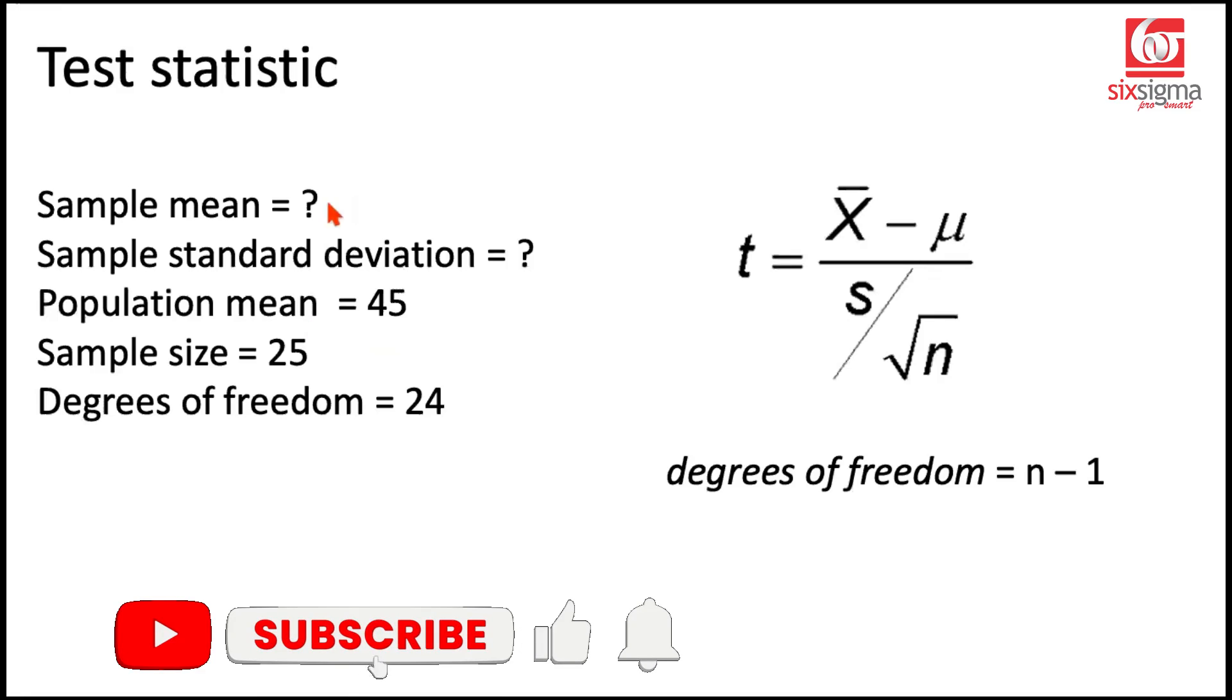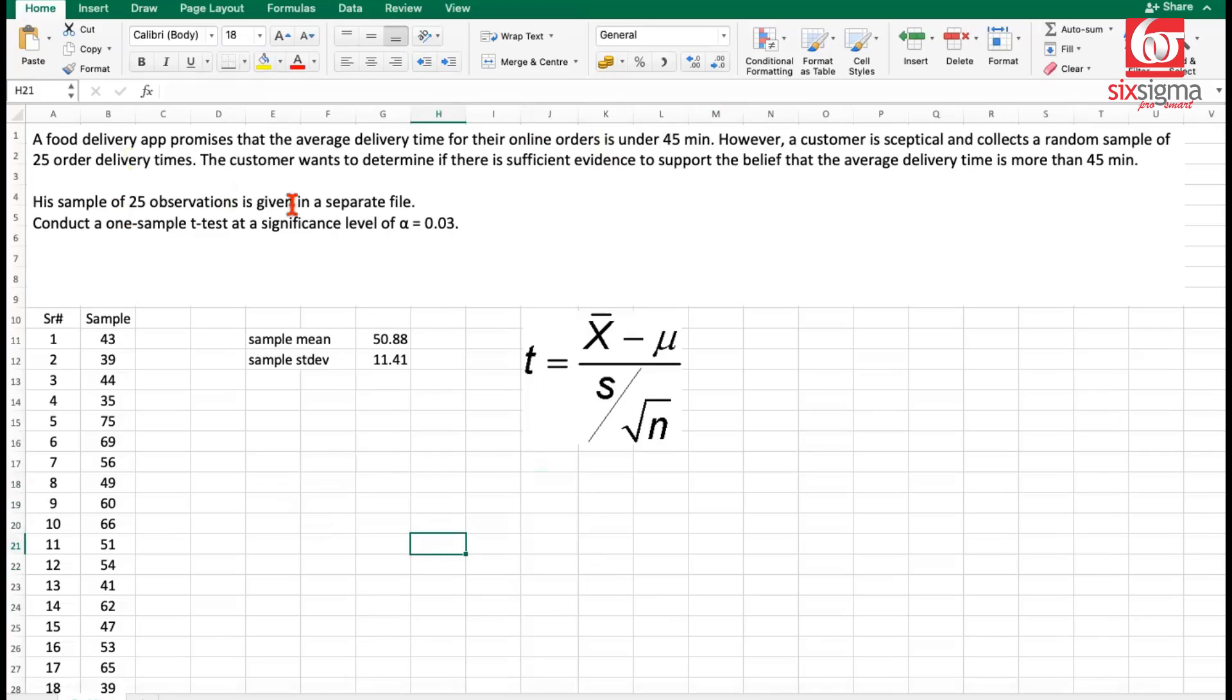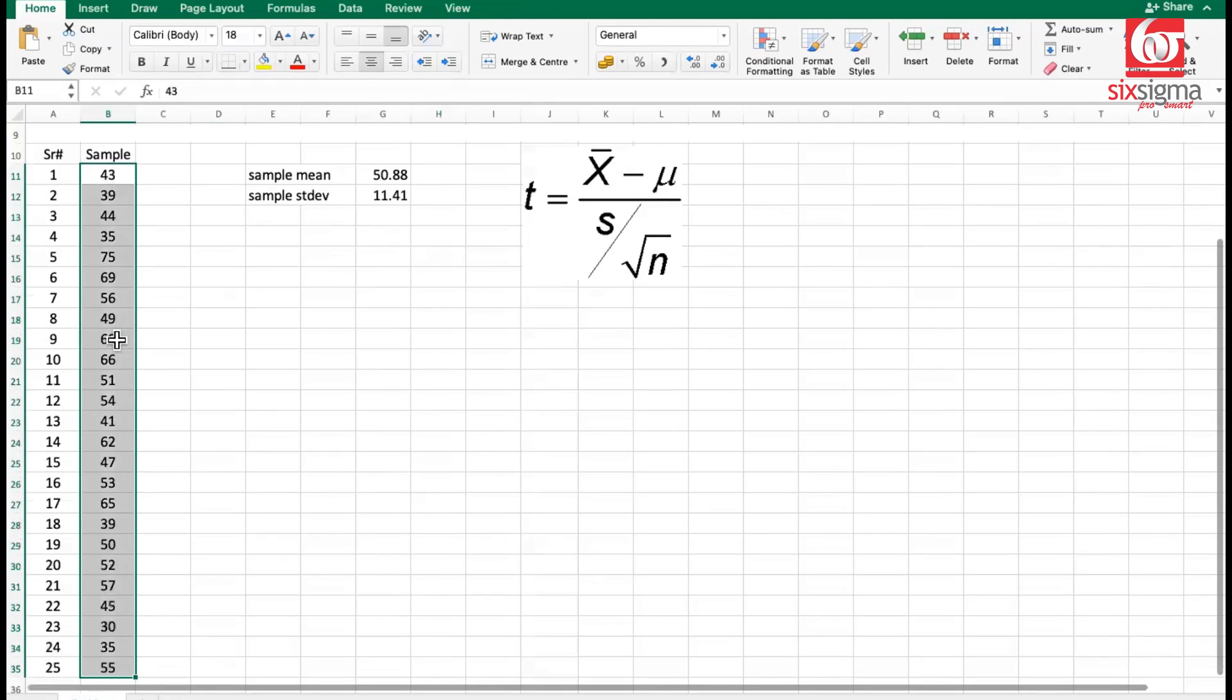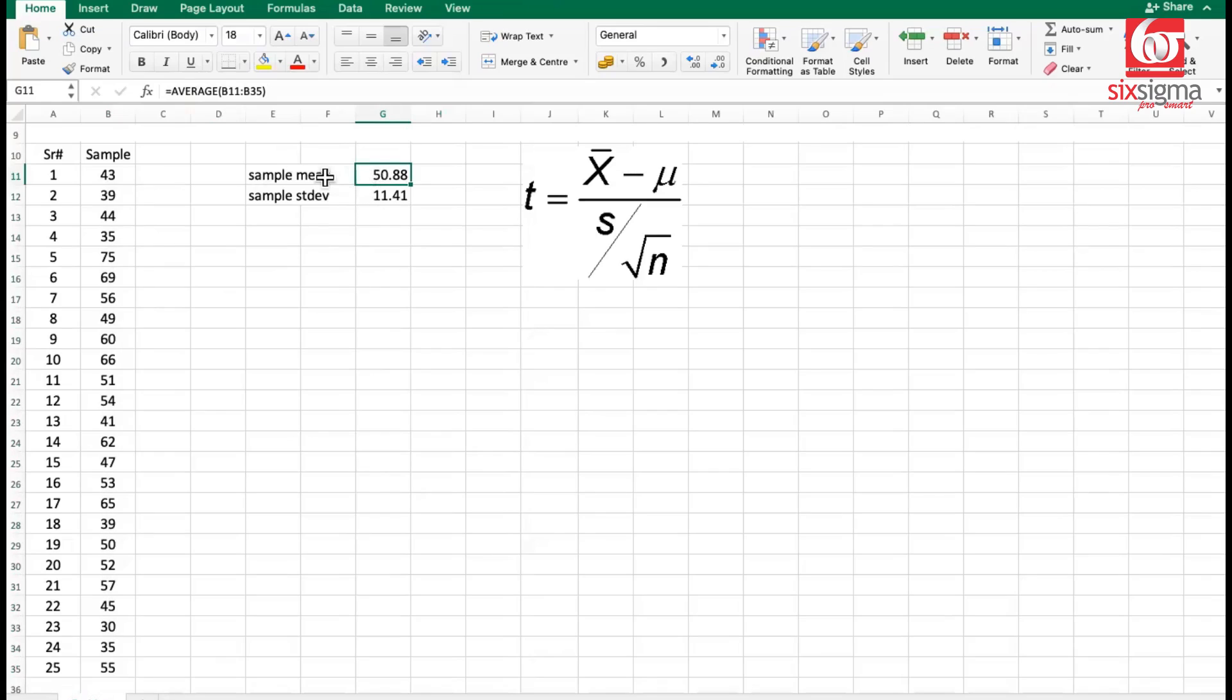Anyway, coming back to the problem. So we still don't know the sample mean and sample standard deviation. And this is what we have to find out from the raw data. Let me take you to a spreadsheet where we'll solve this problem now. All right. So we are here and we have the same problem stated here. These are the sample delivery times that this customer has collected. These are the 25 values, serial number 1 to 25, right? If you want to calculate the average, you can write the average function and you will get the average as 50.88. And if you want to calculate the standard deviation, you can use STDEV.S. This is 11.41.